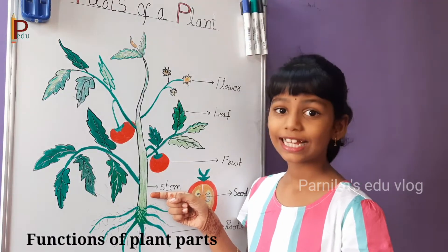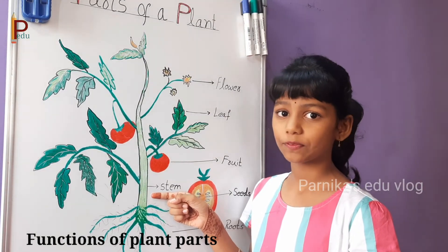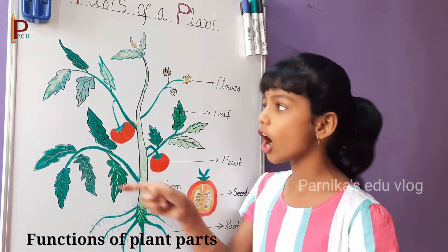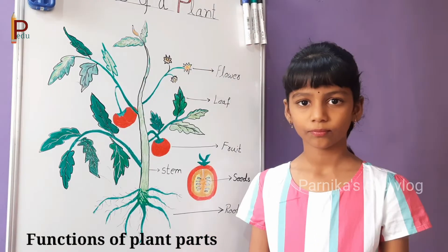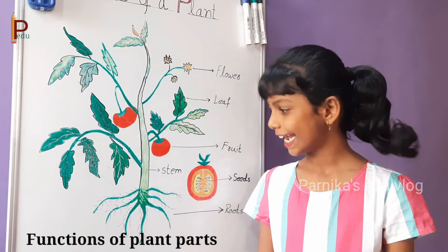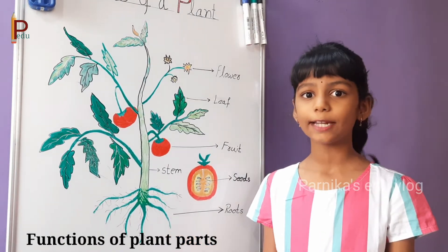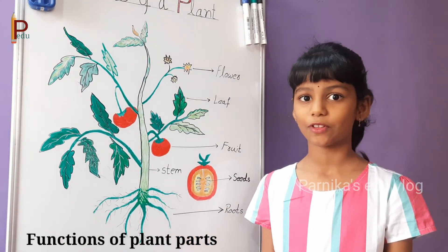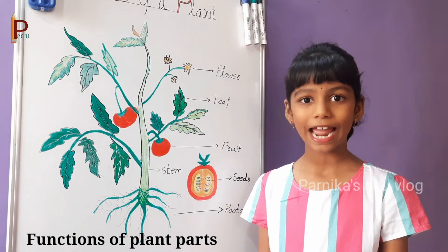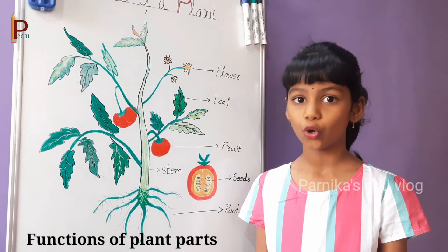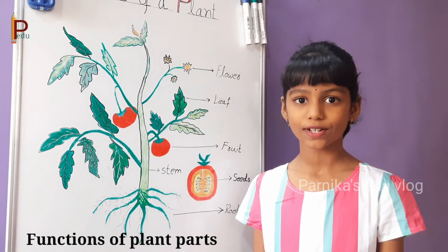Stem carries water and food to all parts of the plant. Roots absorb water and minerals from the soil and hold the plant in the ground so it does not fall over.